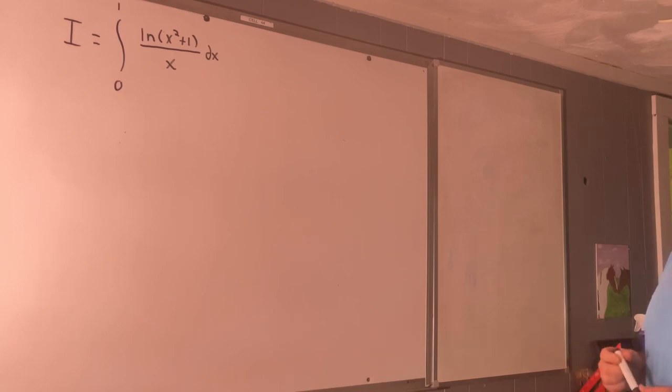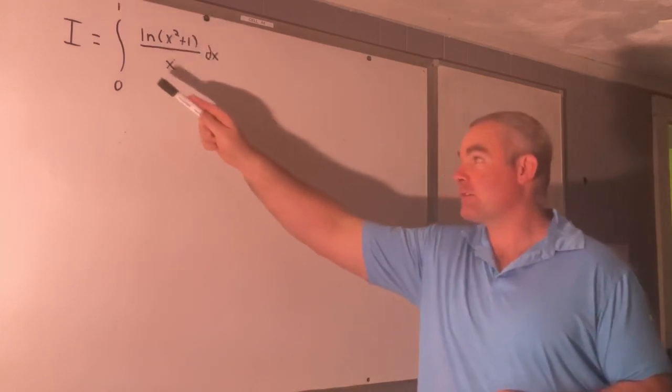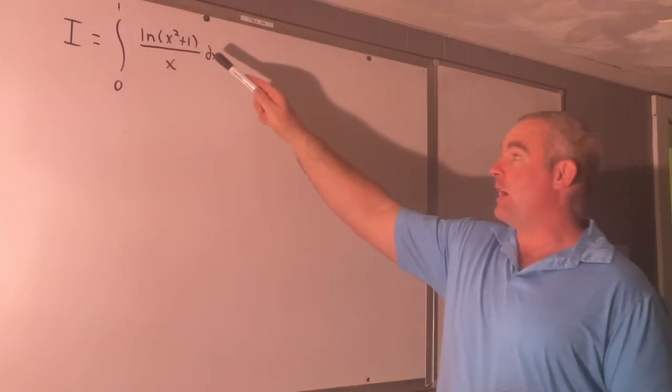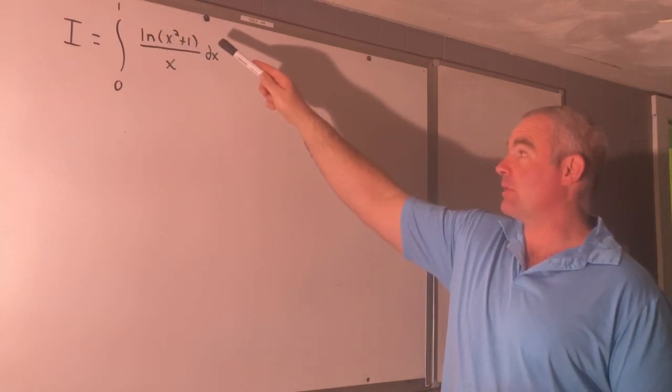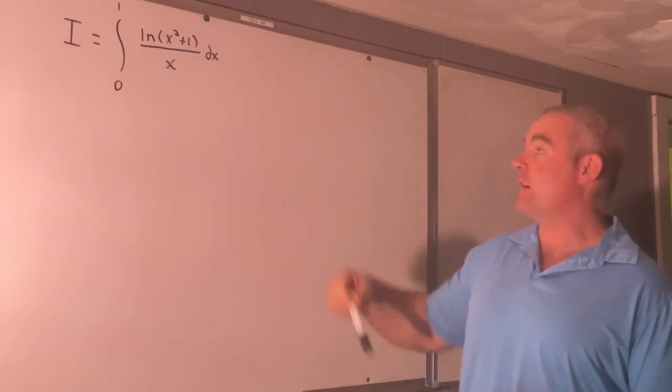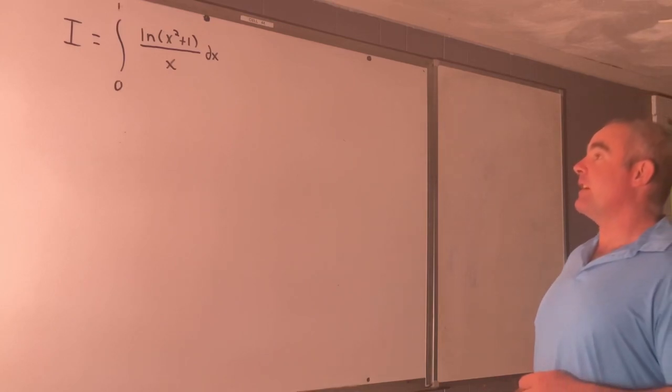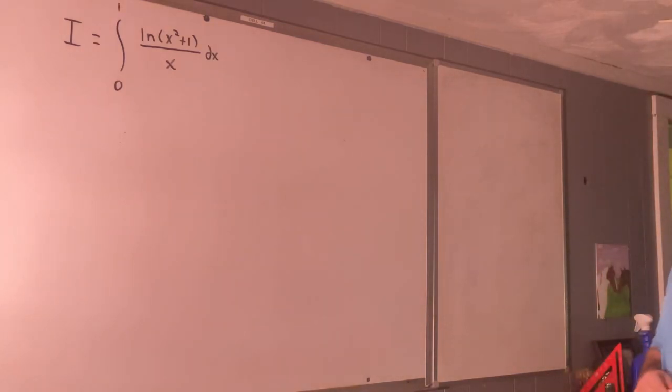I was successful using Feynman integration by doing integration by parts on this where I differentiated natural log x squared plus 1 and integrated 1 over x to get me a form that I was able to kind of manipulate into a Taylor series and get the answer that way.